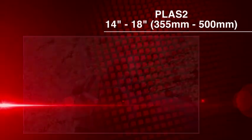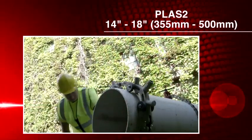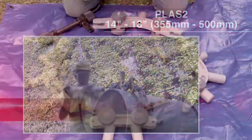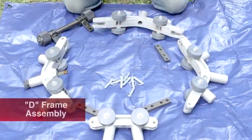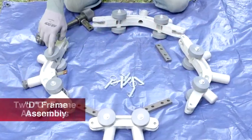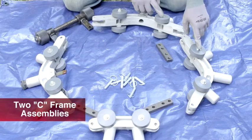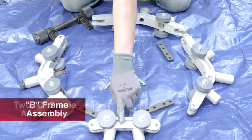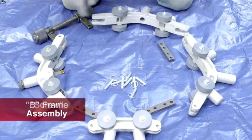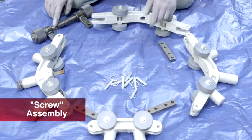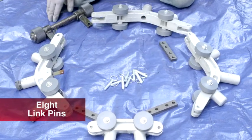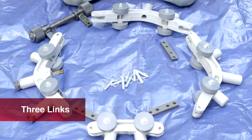Next, we will assemble the PLAS-2 on 18 inch pipe. This assembly includes the D-frame assembly, two C-frame assemblies, one B-frame assembly, one screw assembly, eight link pins and three links.